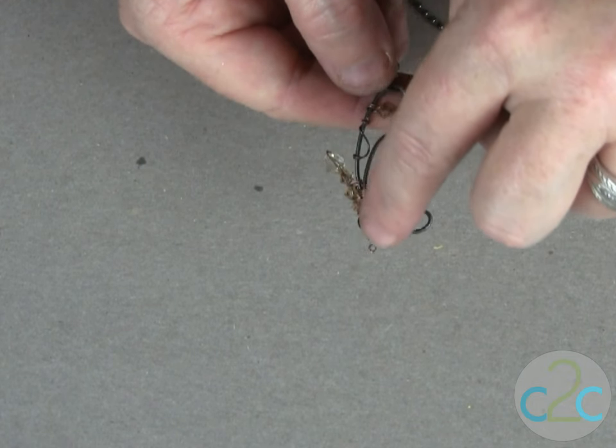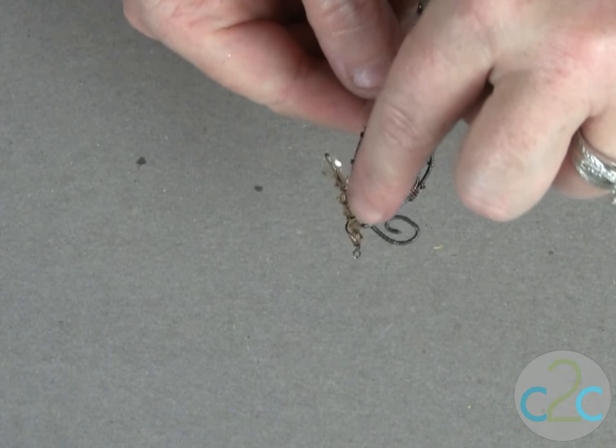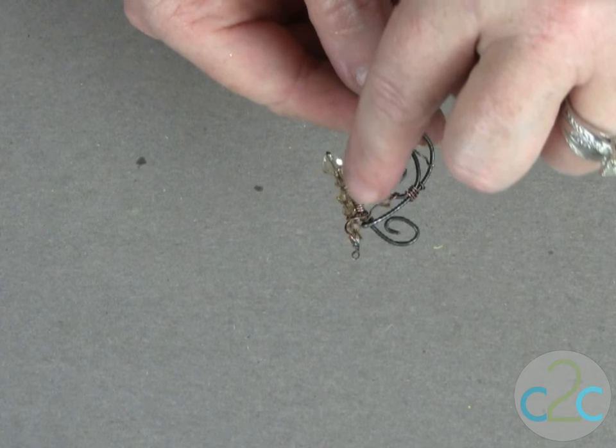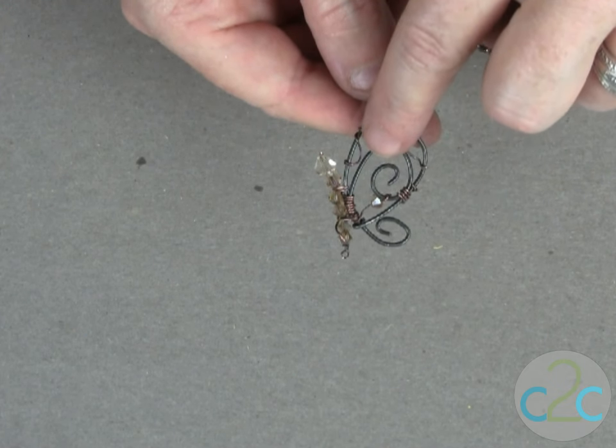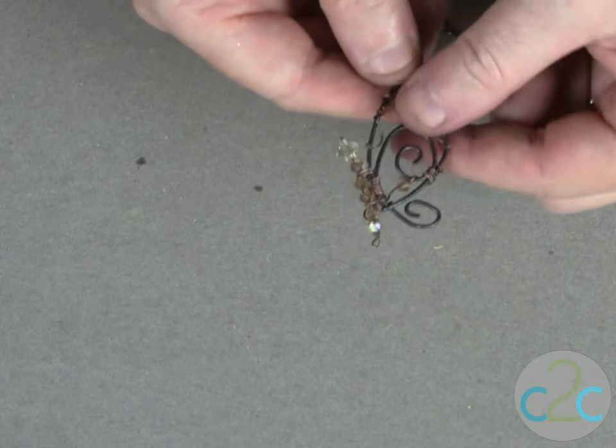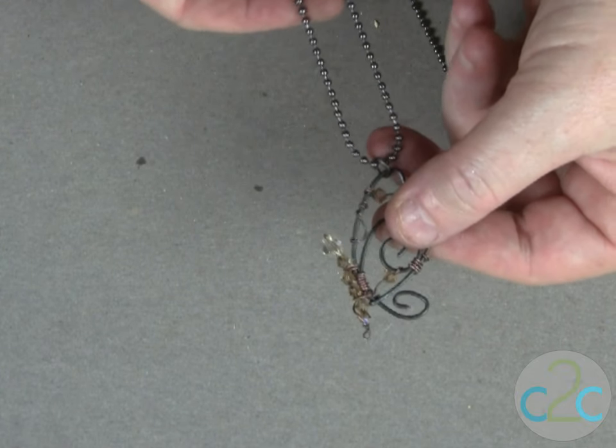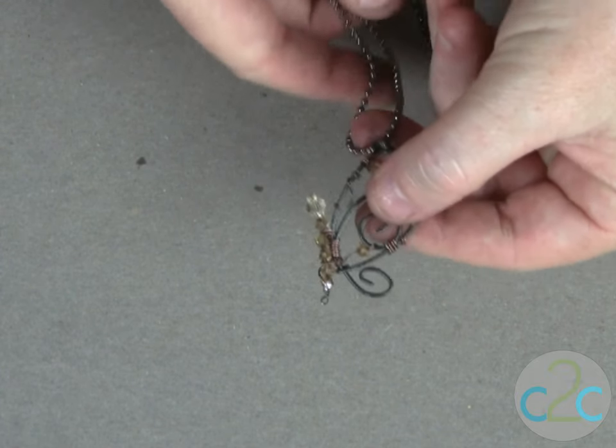I've also used the wire to string on these crystal beads here to create the body and then a separate wire to wrap it to the wings. All you have to do then is add a little jump ring and a ball chain and it's ready to wear.